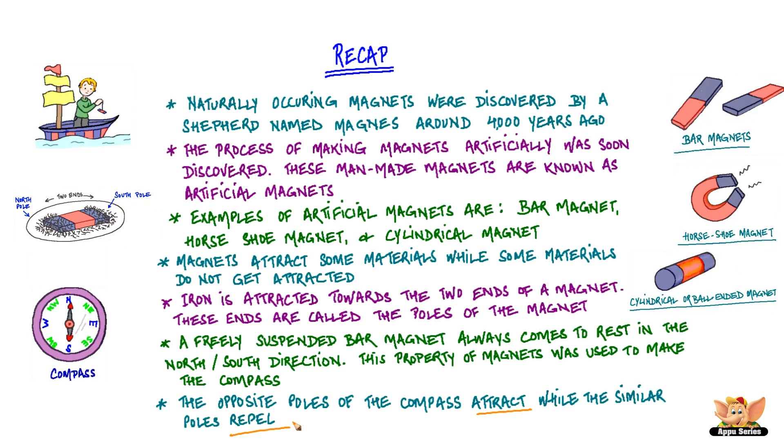The opposite poles of the magnet attract while the similar poles repel.